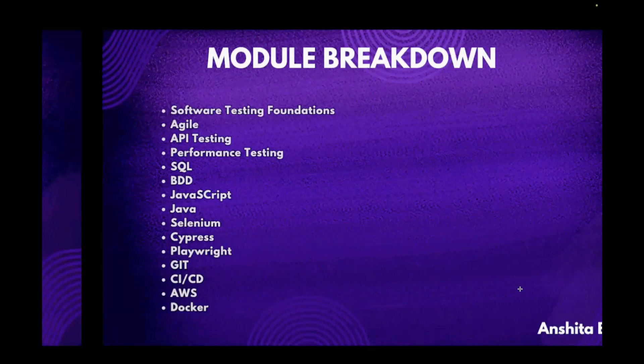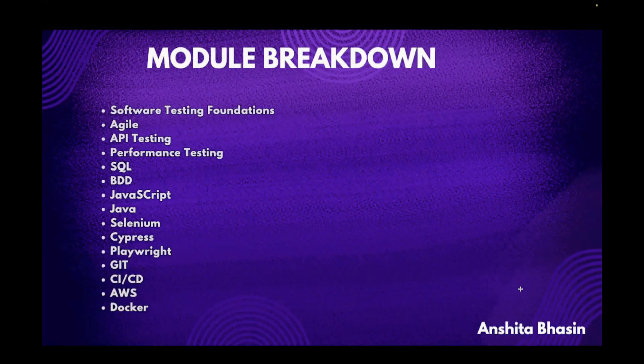This is our module breakdown. We have around 15 modules in the course, starting from fundamental topics like software testing foundations, agile, and API testing, to some advanced topics like Cypress, Selenium, Playwright, Git, AWS, and Docker.